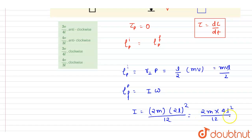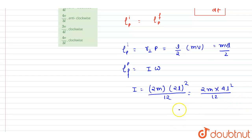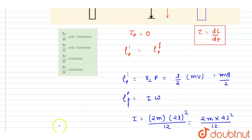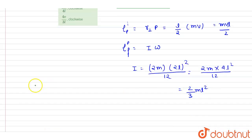So it is 2m times 4l squared by 12, which is 2 by 3 ml squared times omega. Now if I equate these two, I'll put the value of initial and final angular momentum.